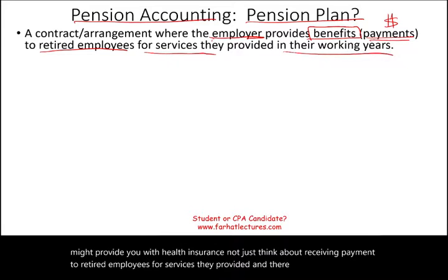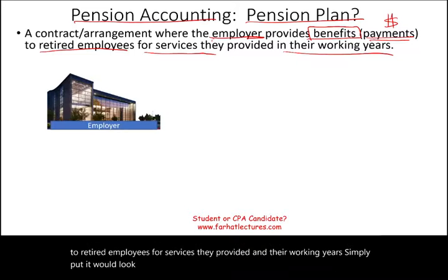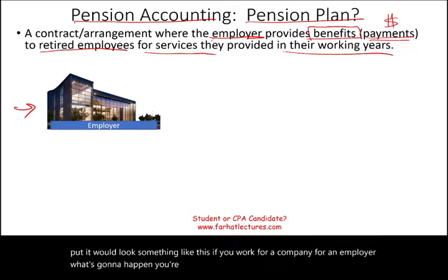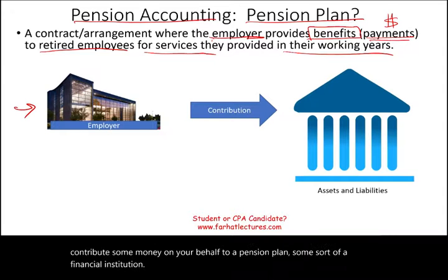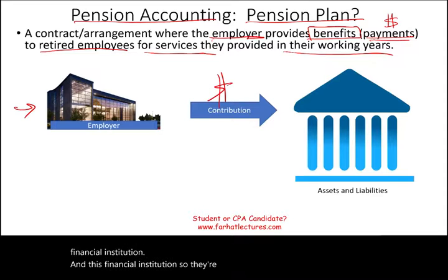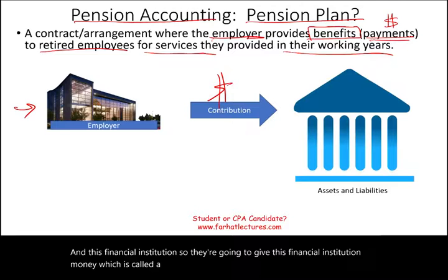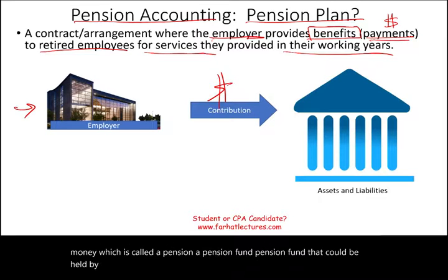Simply put, it would look something like this. If you work for a company, for an employer, the company will contribute some money on your behalf to a pension plan — some sort of a financial institution — and this financial institution holds what is called a pension fund. It could be held by a bank, financial institution, or trustee. It's a separate entity.